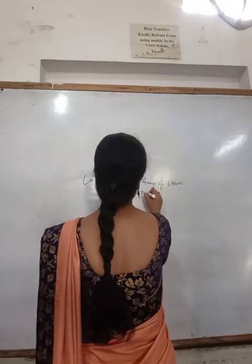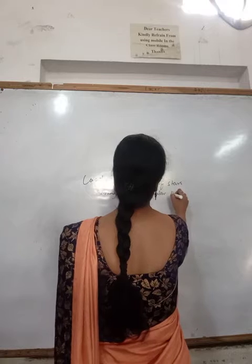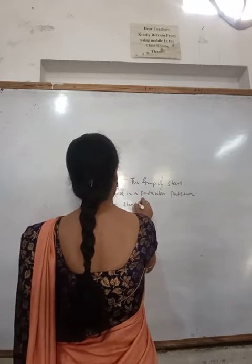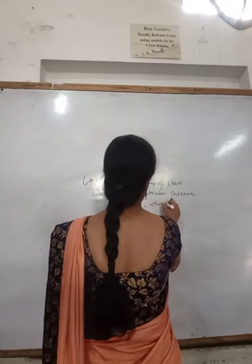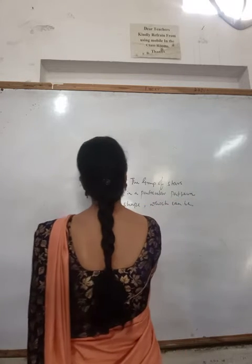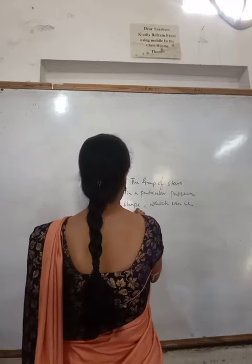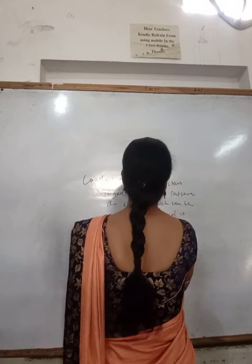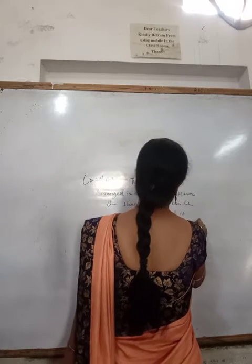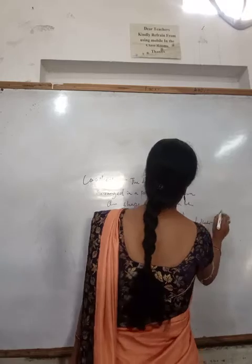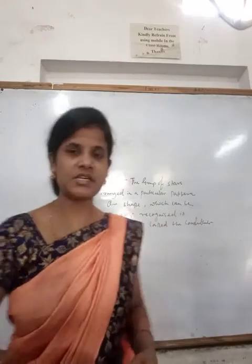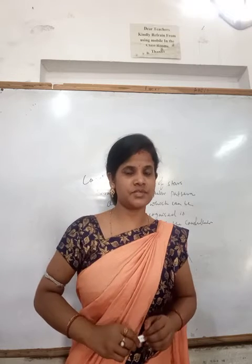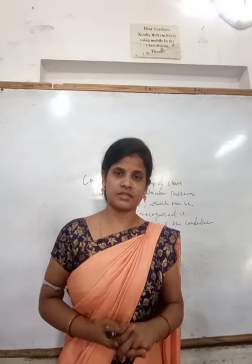A group of stars arranged in a definite pattern or shape which can be easily recognized is called a constellation.